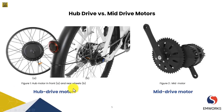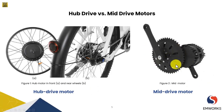Then we have the mid drive motor — it's very simple to understand. The motor is placed between the pedals at the bottom bracket of the bicycle, and it uses the bicycle drivetrain to transfer the motor's power to the rear wheel and move the bike forward.